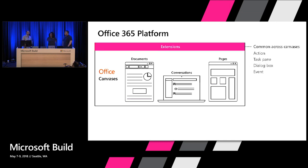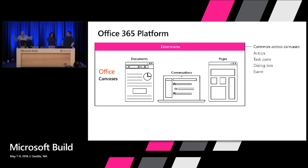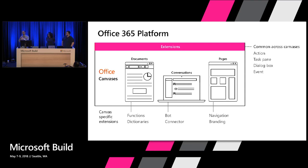Within our applications, across the canvases, we have this notion of extensions — when you want to teach our canvas to do something new: a new domain, a new behavior, an integration with your line-of-business system. These come in two flavors: generic extensions like actions, task panes, or dialog boxes that function the same way across all canvases; and canvas-specific extensions. When you think about a bot or connector, we want it to work the same way in Teams as it does in Outlook — across Windows, Online, and iOS — so we think about canvases as the unit you're extending.